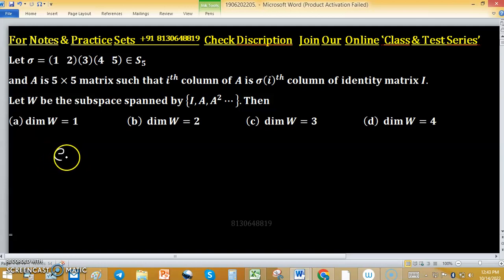The ith column of A means: suppose this is matrix A and its ith column will be the σ(ith) column of the identity matrix. So this is the σ(ith) column of the identity matrix.